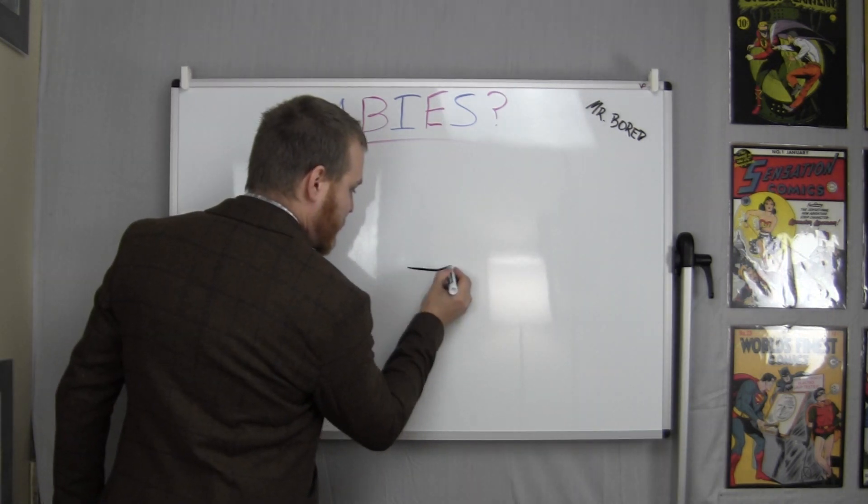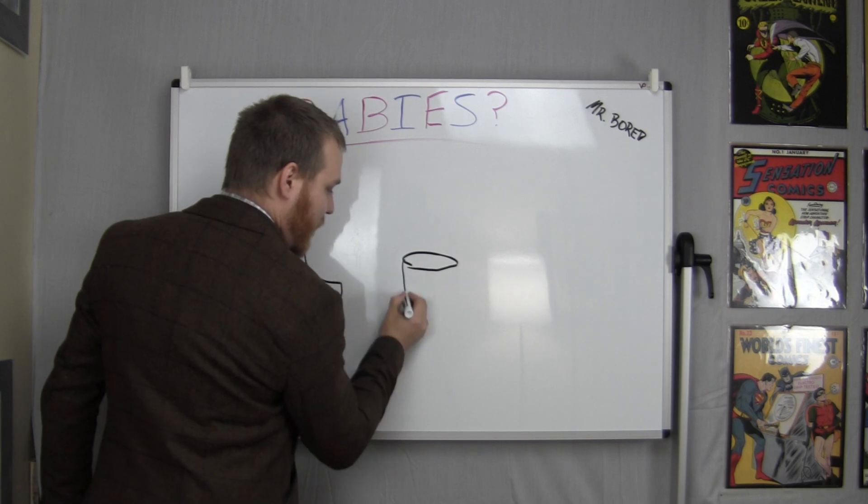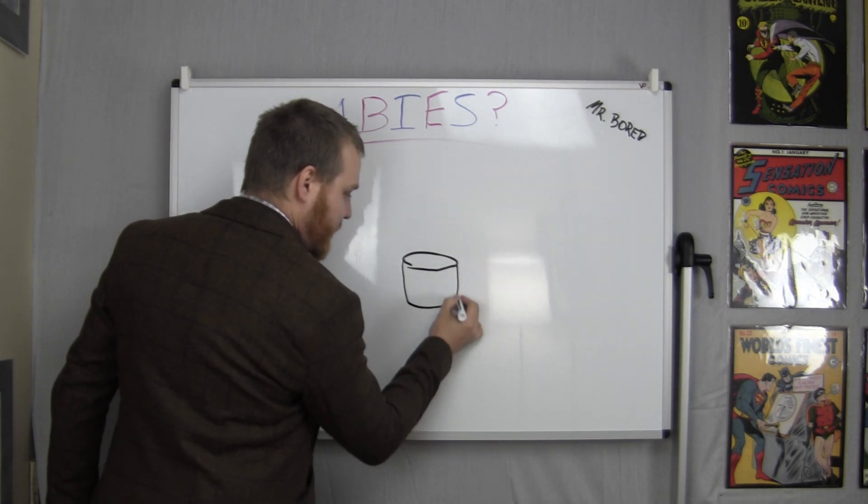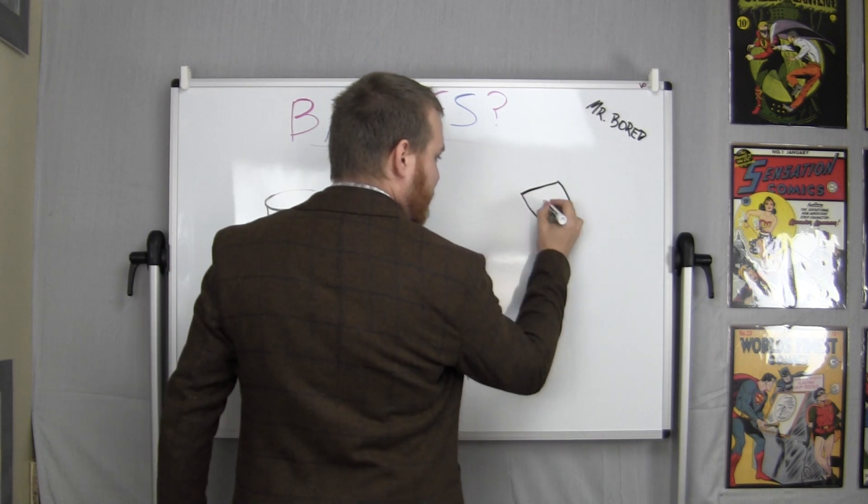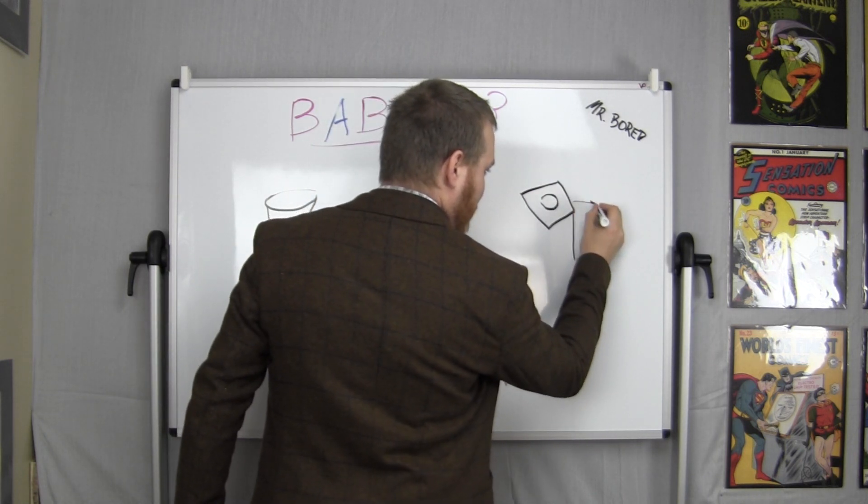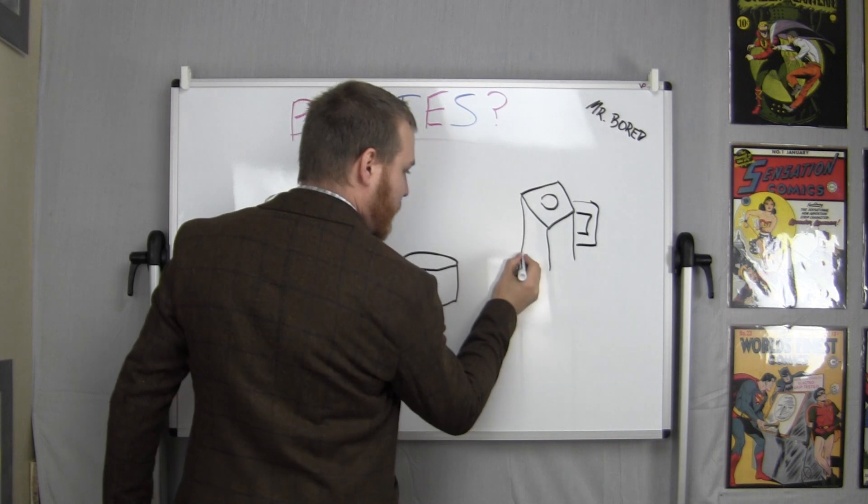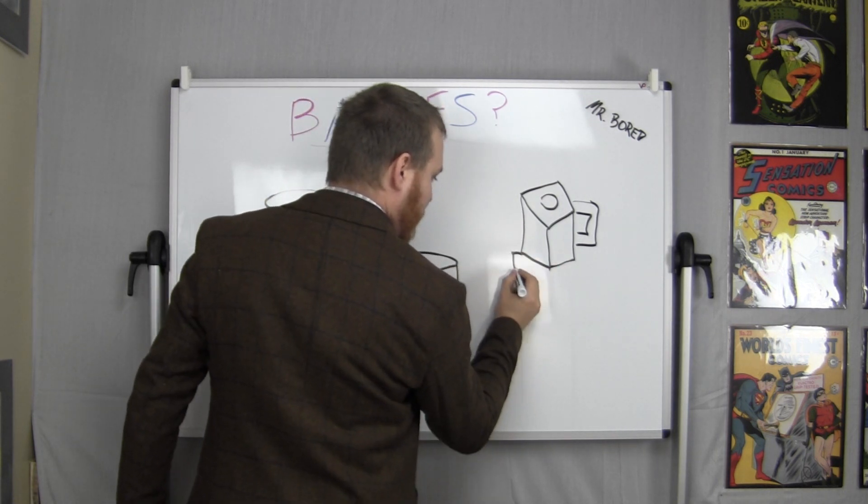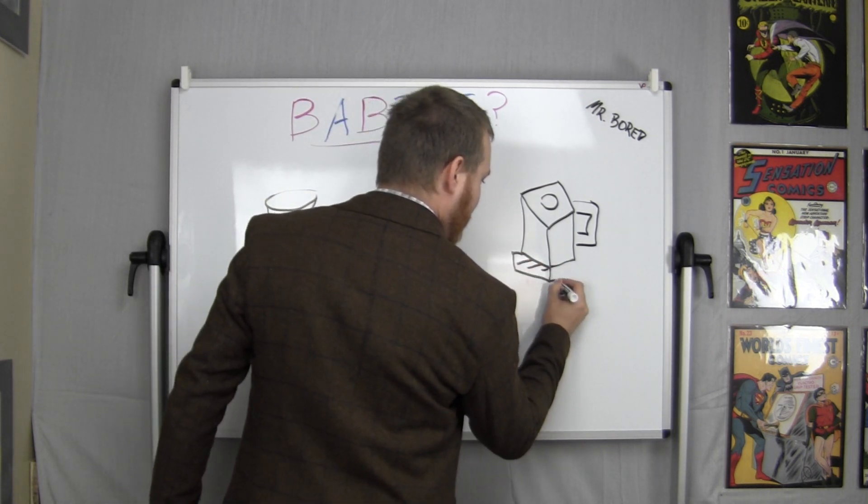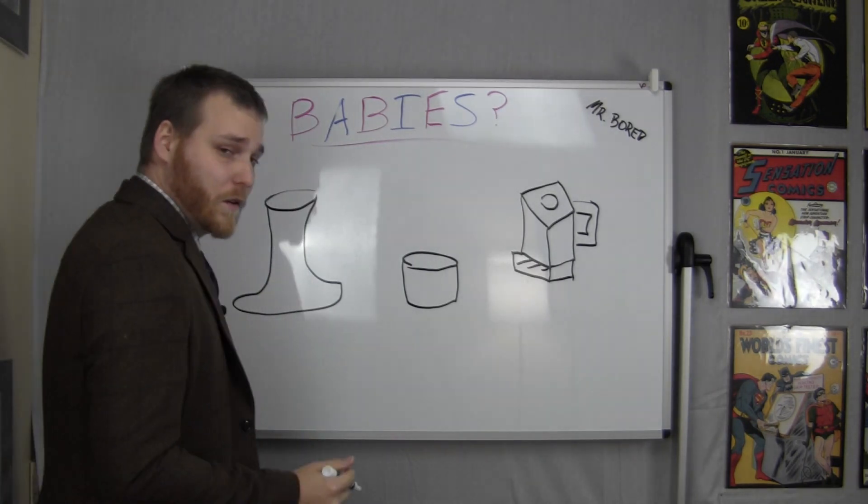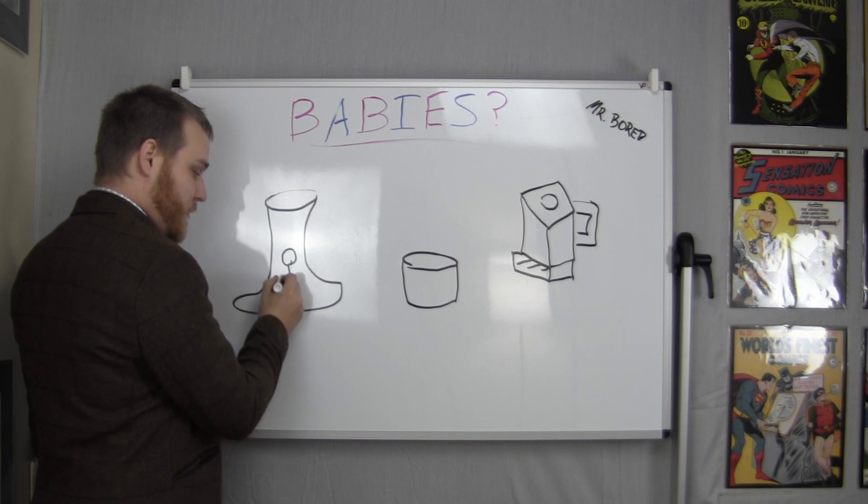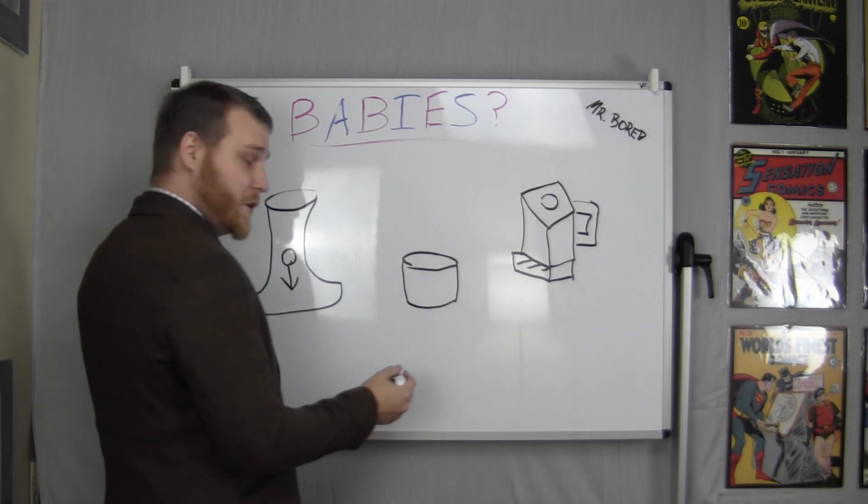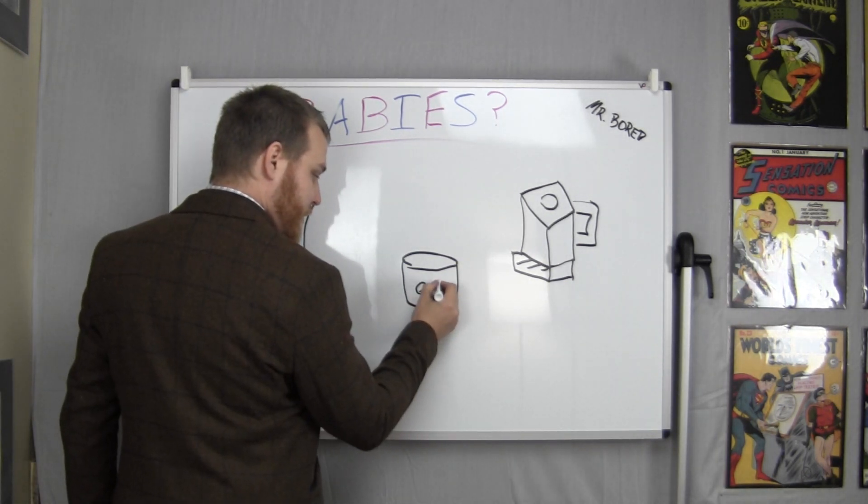The process is quite simple. It involves two organic components and one incubator. Component number one comes from the man. Component number two comes from the female.